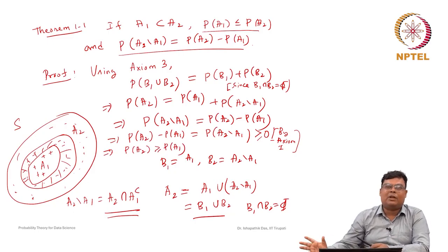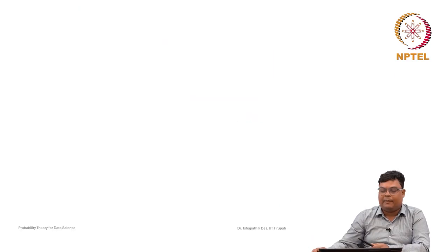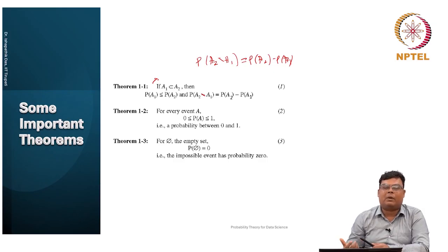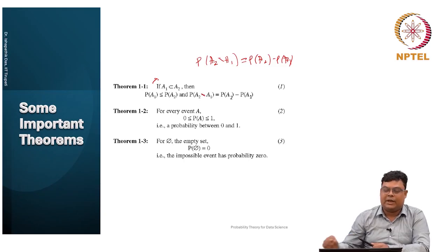This proof is not very complicated or difficult, but we still need to prove it because in the future we will use this theorem frequently. We need to know that whenever A is a subset of B, P(A) ≤ P(B), and P(B minus A) = P(B) minus P(A). If A is not a subset of B, we cannot use this result. That is why it is important.